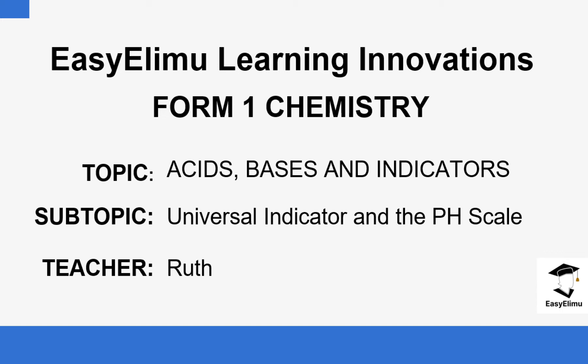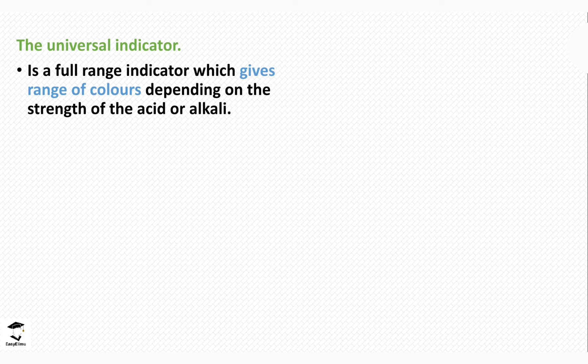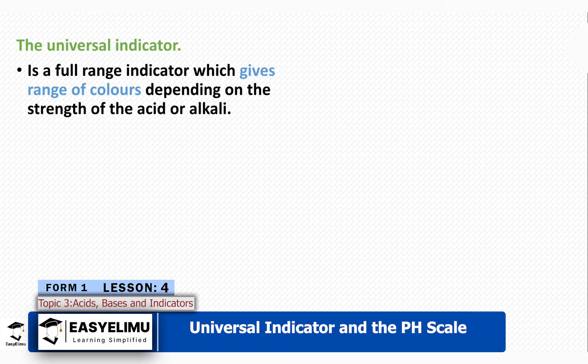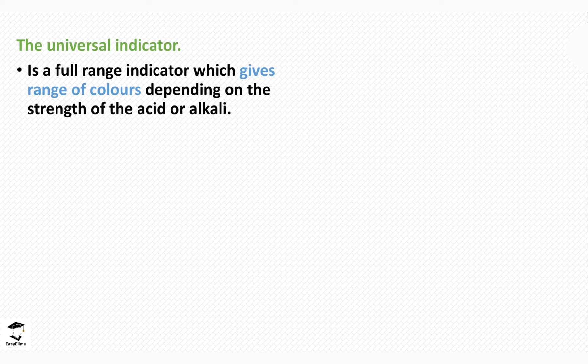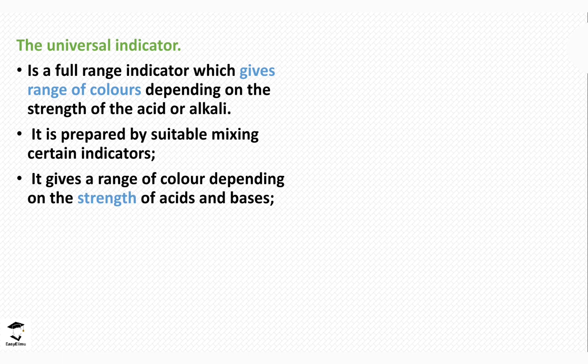Today we are going to look at the universal indicator — how it works and how the pH scale works. The universal indicator is a full-range indicator that gives a range of colors depending on the strength of the acid or alkali. Unlike commercial indicators, it can tell if an acid or base is strong or weak. It is usually prepared by mixing different types of indicators.